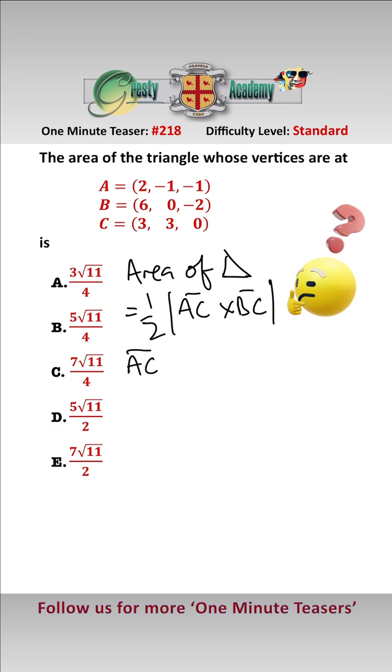Okay, so let's have a look. We have that the vector AC equals (1, 4, 1) from the coordinates above. We have the vector BC equals (-3, 3, 2).